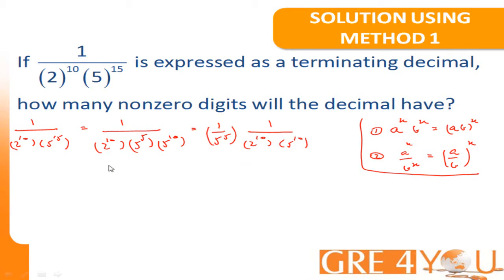A 1 over 5 to the 5, I can bring the exponent outside. So, that will be equal to 1 over 5 the whole to the power 5. And I've basically used this exponent rule number 2. And now, this into 1 over 2 to the 10 times 5 to the 10.